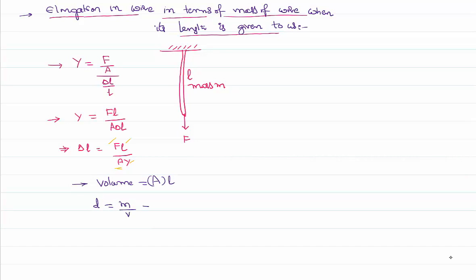We also know density is equal to mass by volume for the wire. That implies volume can be written as mass by density. Rearranging the terms, mass by density equal to area into length. As area is not known to us, I can write area as mass by density into length.